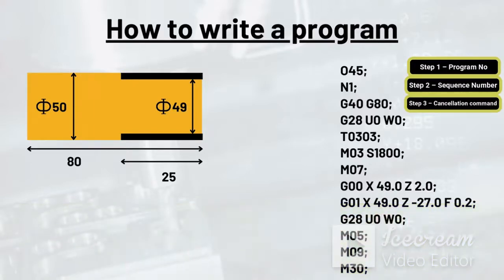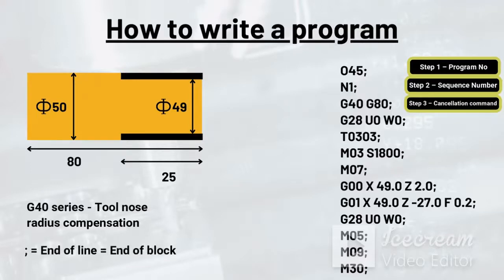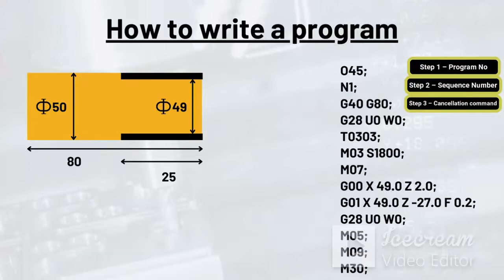The third step is cancellation command. In this step we cancel some pre-existing commands in the system, like that of G40 series which is for tool nose radius compensation, and G80 series. This is a precautionary measure to avoid any mishaps and accidents, but it is not mandatory. You can skip this particular line of code. The semicolon here is provided at the end of every line of program to end it right there. It is called end of block command.